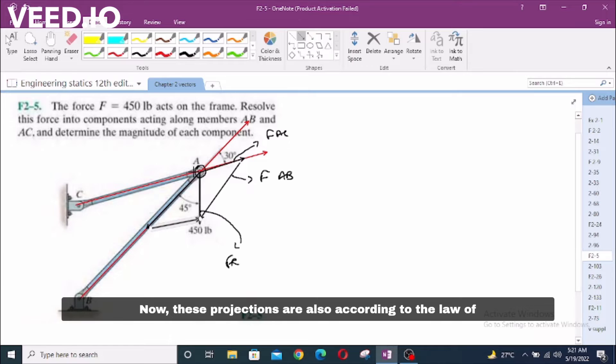Now these projections are also according to the laws of vector addition. Again, this FR is drawn from the tail of first vector to the head of last vector.